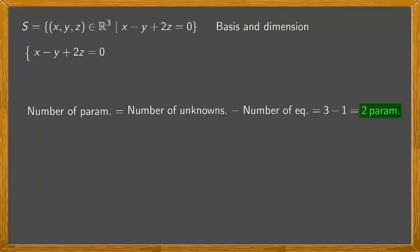Now we have to assign the parameters to the unknowns. The usual way is to start at the end, and if problems arise we'll find an alternative. In our case, let z equal alpha and y equal beta, where alpha and beta vary in R.